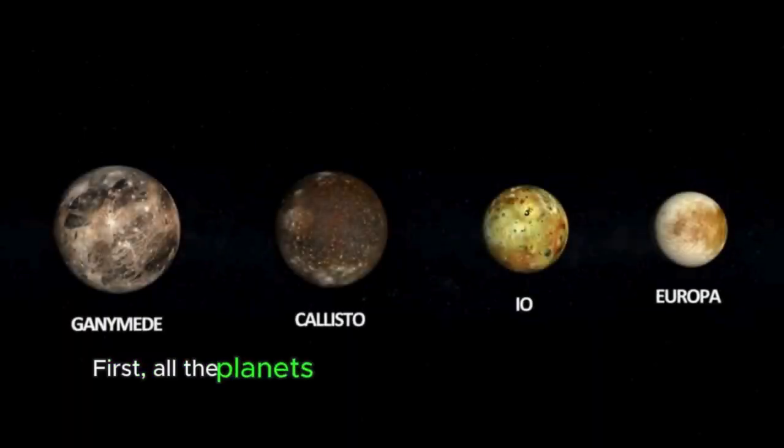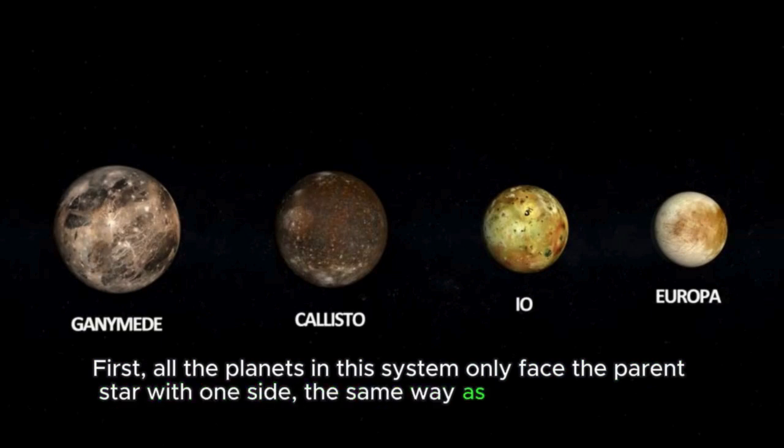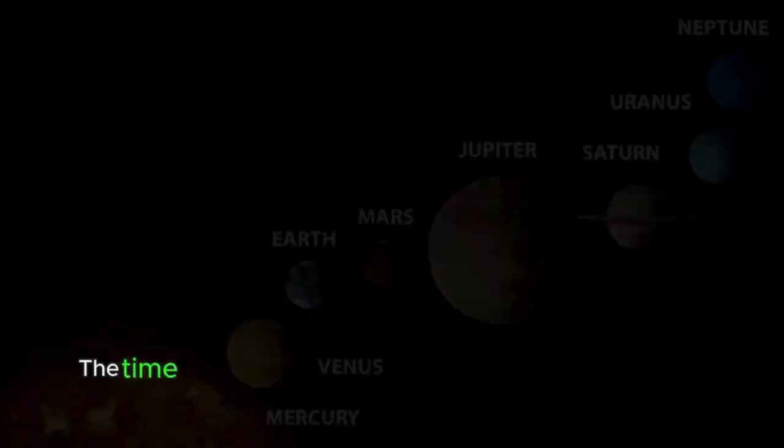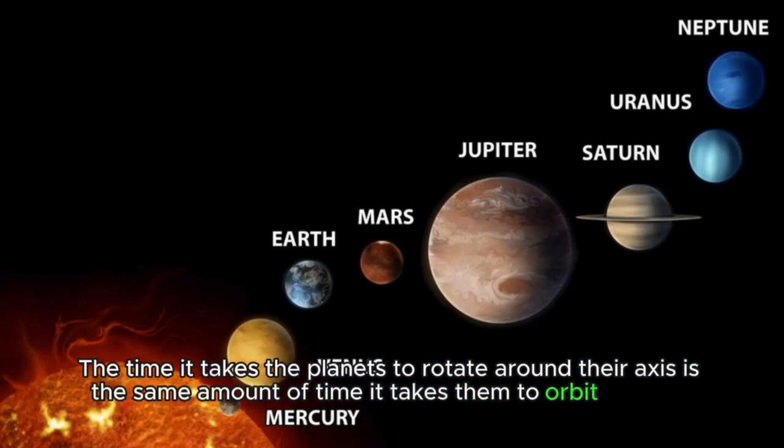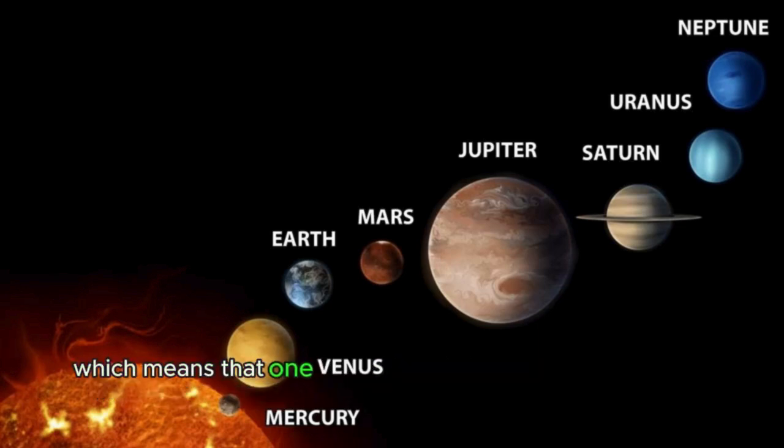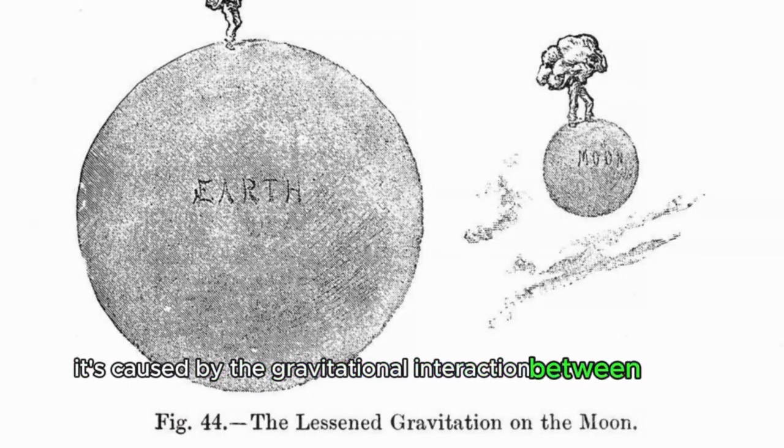First, all the planets in the system only face the parent star with one side, the same way as we see the Moon. The time it takes the planets to rotate around their axis is the same amount of time it takes them to orbit the star, which means that one day on these planets is equal to one year in length. This process is called tidal locking. It's caused by the gravitational interaction between space objects.